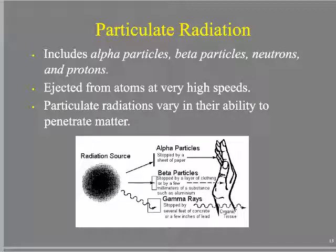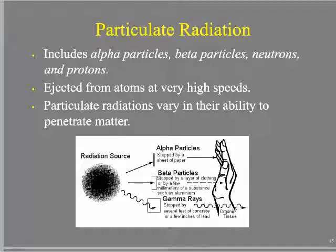Beta particles are roughly the size of an electron — they will not do as much work, but they will go further. In this illustration, alpha particles are stopped by a sheet of paper; beta particles can be stopped by a layer of clothing or a few millimeters of skin. Versus a gamma ray produced by a radioisotope: it can go straight through the body, straight through this building, and keep on going, potentially not ionizing very much, but it has the potential to keep going.